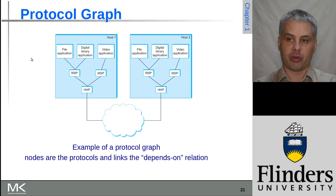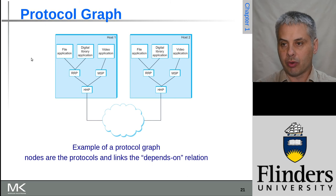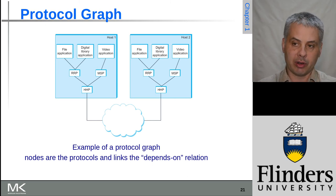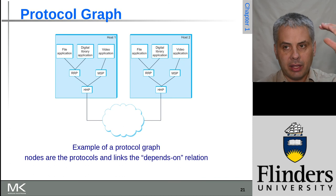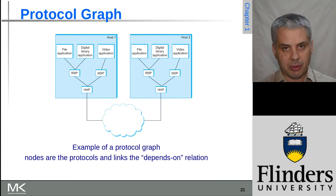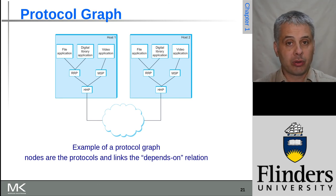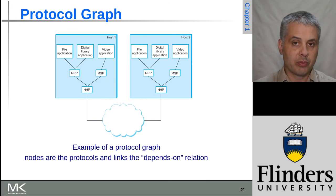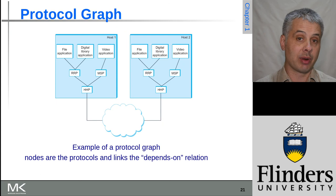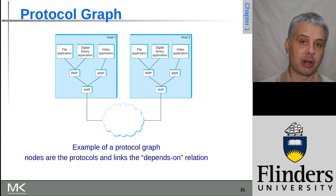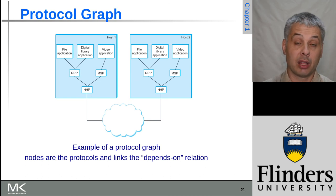You end up with protocols that depend on one another. The nodes in the protocol graph are the protocols, and the links represent relationships of dependence. This can represent the set of protocols that one or more applications depend on. The idea of layers, protocols, and their dependencies are all interrelated, and there is considerable complexity in making this work correctly so that we end up with the most interoperable systems possible. Interoperability testing becomes quite important for protocol implementations as well.